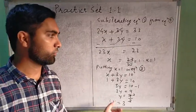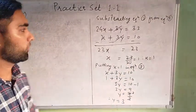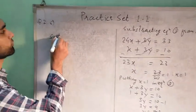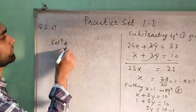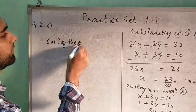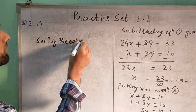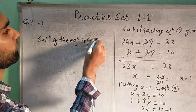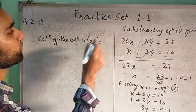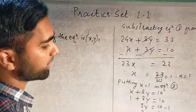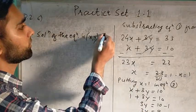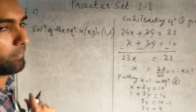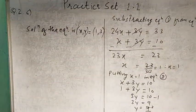Now we have y equals 3 and x equals 1. The solution of the equation is: x comma y equals 1 comma 3.